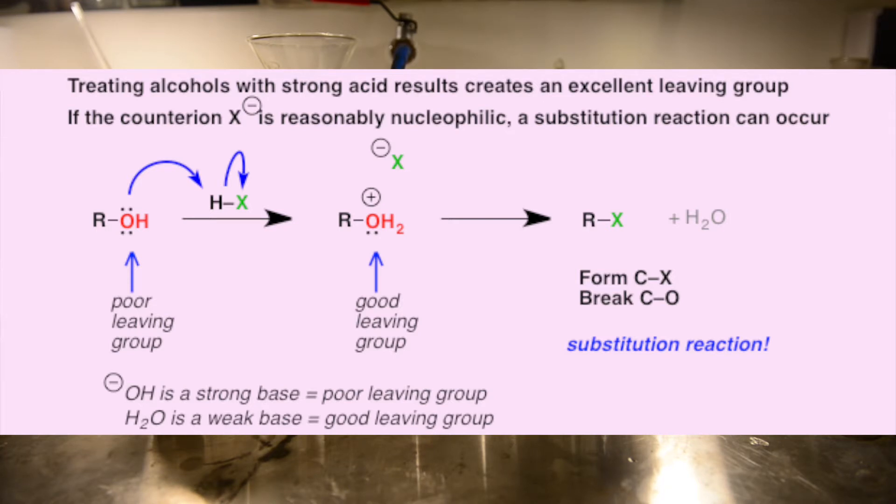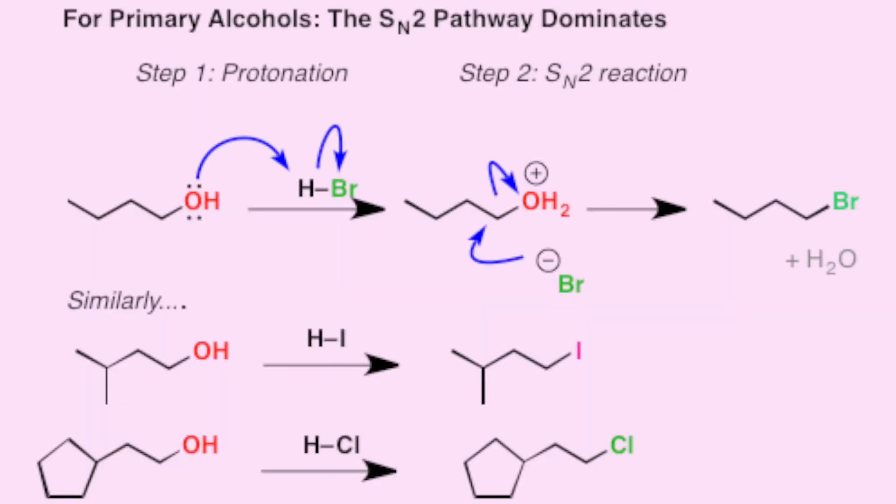Treating alcohol with hydrogen chloride, hydrogen bromide, or hydrogen iodide results in the formation of corresponding alkyl halides. As you can see, it is a two-step process. First, the alcohol is protonated to give its conjugate acid. Secondly, a substitution occurs.